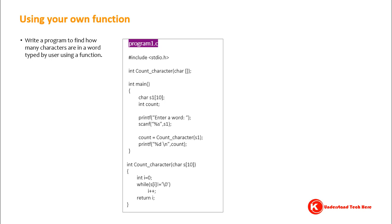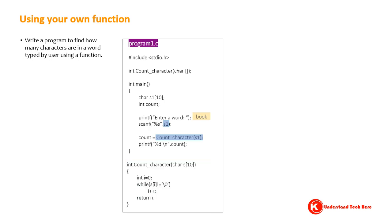Coming back here, the program asks us to enter a word. Let's say we type 'book' — it will be stored in s1. We call the function countCharacter and pass s1 to it. The definition of the function is here. This part is called the definition of the function because it defines what the computer should do when you call that function.